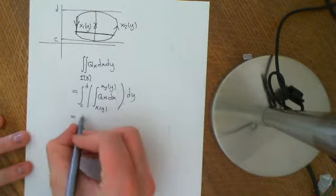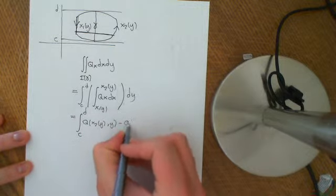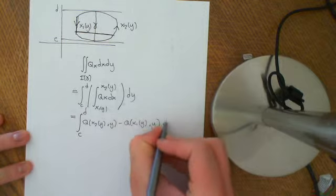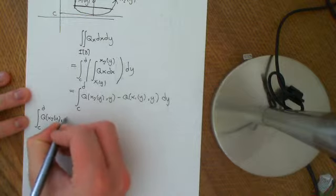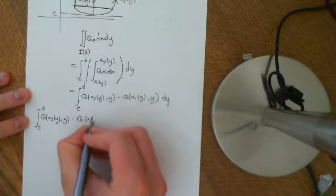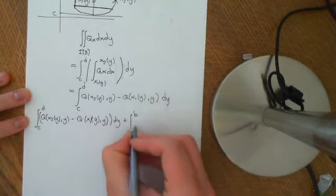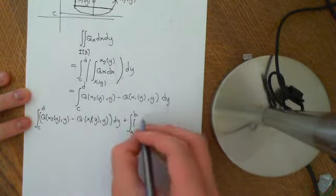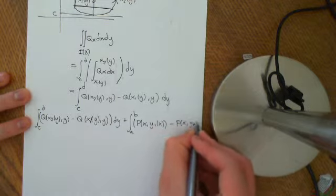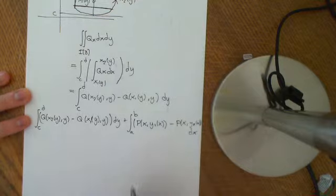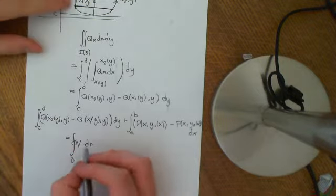Applying the fundamental theorem of calculus, we get the integral from c to d of [q(x2(y), y) minus q(x1(y), y)] dy. We now want to make sure that this, plus the integral from a to b of [p(x, y1(x)) minus p(x, y2(x))] dx, equals the line integral of the vector field dotted with dr around the closed curve gamma.